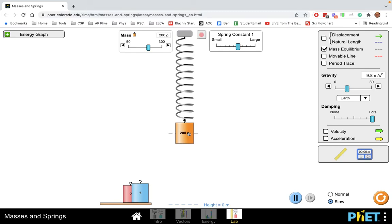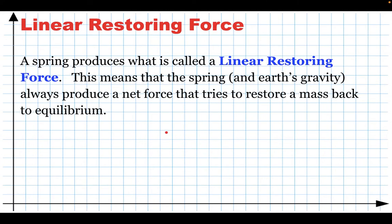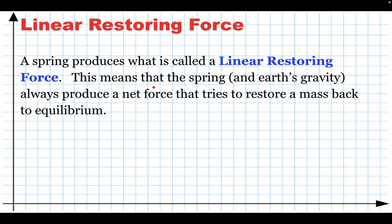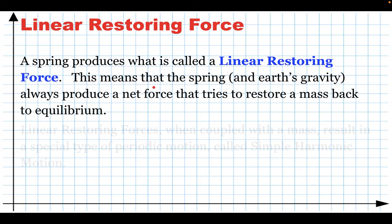And it's a linear restoring force because if I pull it down a little bit, the net force will be up a little bit. But if I pull it down a lot, the net force will be really big. So how big the force is, is proportional to how far I pull it from equilibrium. So that's what we call a linear restoring force. It's a force that tries to restore this mass to equilibrium. And ideal springs work in this way.